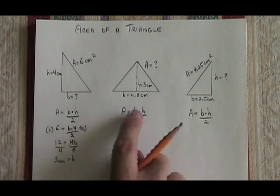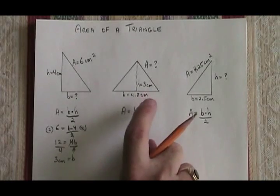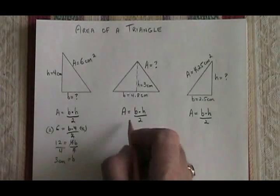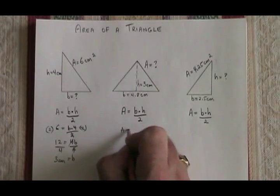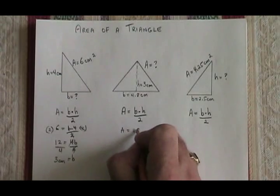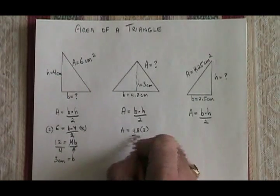In this middle triangle, we know our base and our height. We'd like to know our area. A equals B times H over 2 becomes A equals 4.8 times 3 divided by 2.